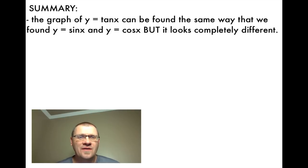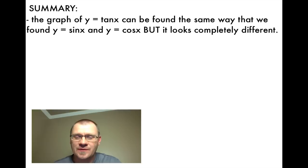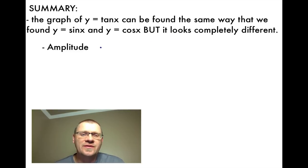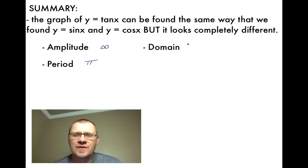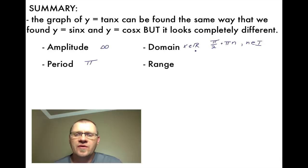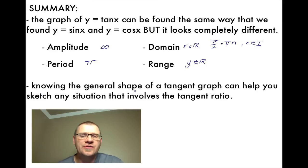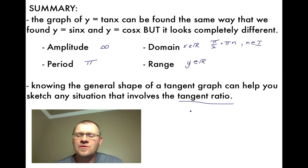In summary, the graph of y equals tan x can be found using the unit circle and a table of values, the same way as sine and cosine, but it looks completely different. The amplitude doesn't actually exist because the graph moves on forever — so you could say it has an infinite amplitude. The period is pi, whereas cosine and sine have a period of 2 pi. The domain is everything except pi over 2 plus pi times n, where n is any integer. And our range, since the graph goes on forever upwards and downwards, is y ∈ ℝ.